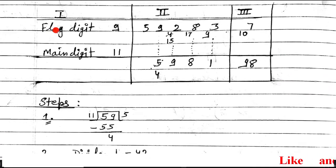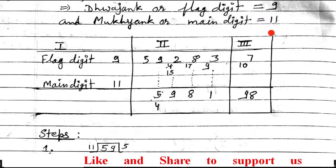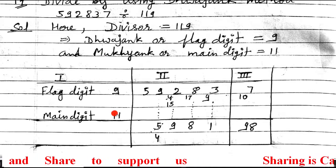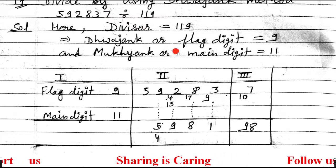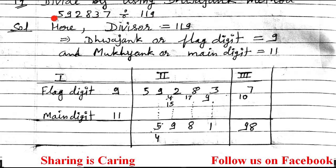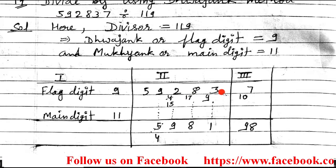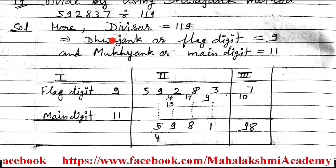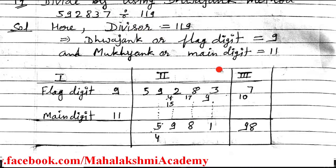The table format is like this. The first section is for the flag digit and main digit. The second section and third section numbers will enter from the dividend. Since only one number is selected as the flag digit, from the back only one number enters the third section and all remaining numbers enter the second section.